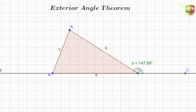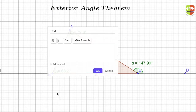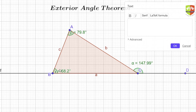Now let's measure another angle — angle BAC, which is beta — that's 79.8 degrees, as you can see. And one more angle: angle CBA, which I'll call gamma. So I've now measured angle A (beta) and angle B (gamma), and the exterior angle ACD.